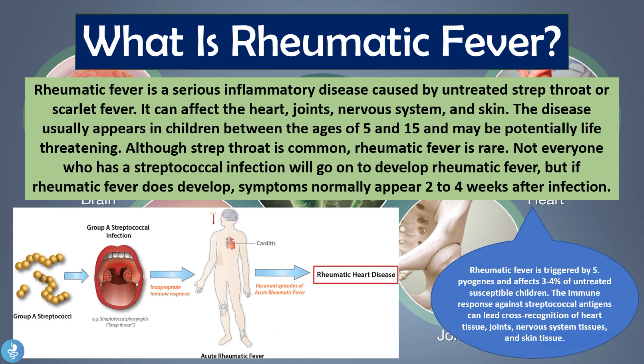Rheumatic fever is a serious inflammatory disease that usually affects children between the ages of 5 and 15 who have had a recent untreated strep throat infection. It can be potentially life-threatening because it causes serious inflammation in the child's heart, joints, nervous system, and skin. Rheumatic fever is triggered by Streptococcus pyogenes and affects three to four percent of untreated susceptible children — those with an untreated scarlet fever or strep throat infection that progresses into rheumatic fever.